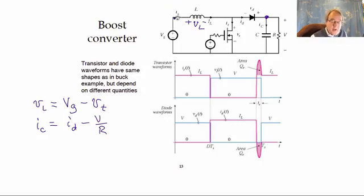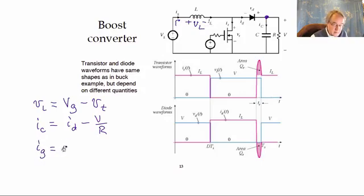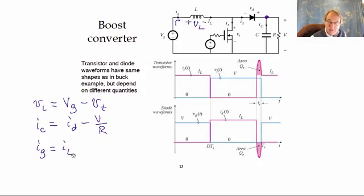One other small point: we need to write the equation of the input current Ig. But for the boost converter, Ig is the same as I_L. So if we find the average I_L or DC component of inductor current, that's the same as Ig and we don't have to do any further work.